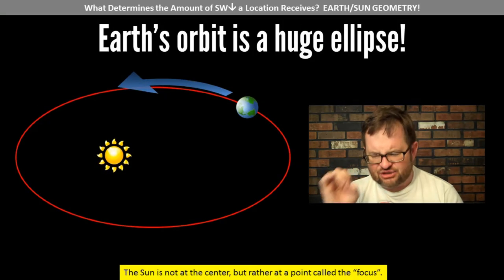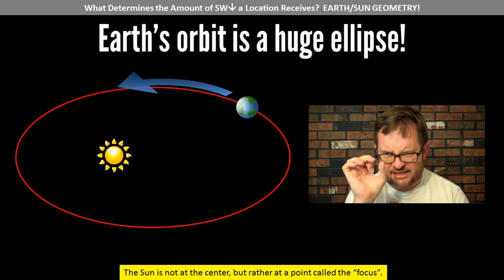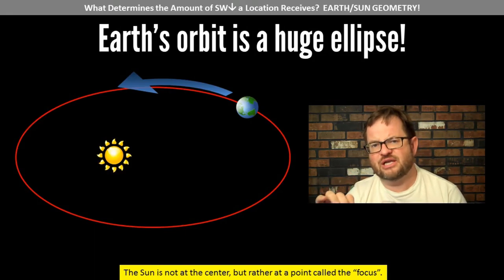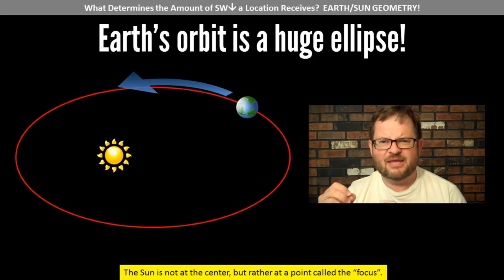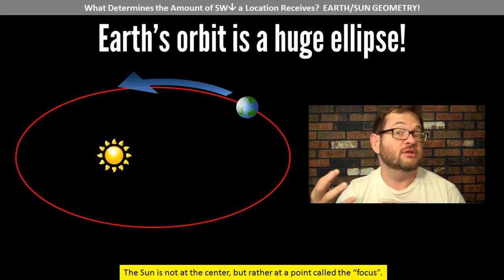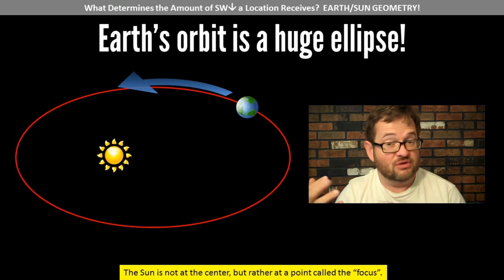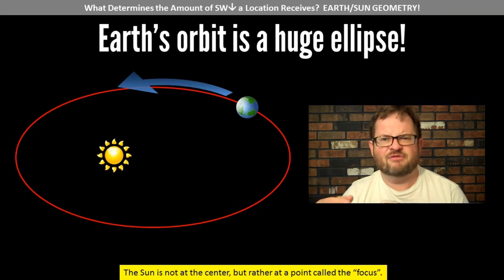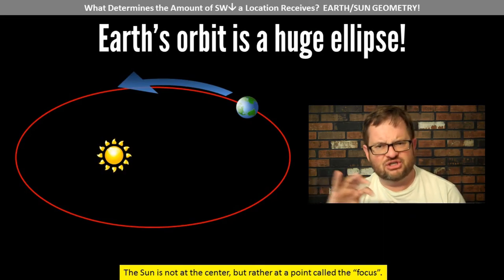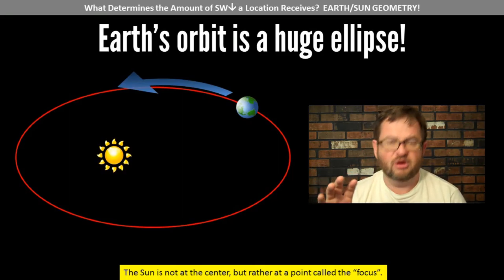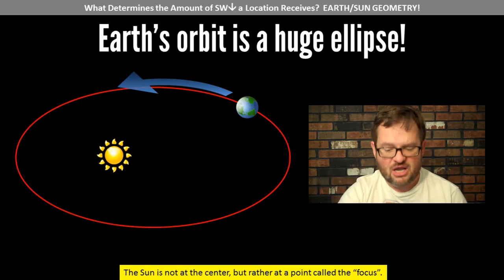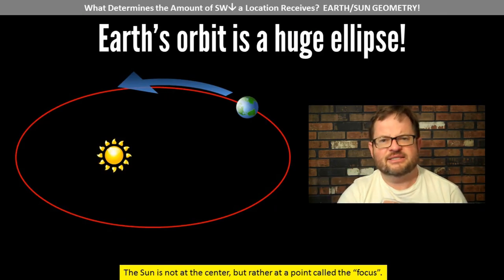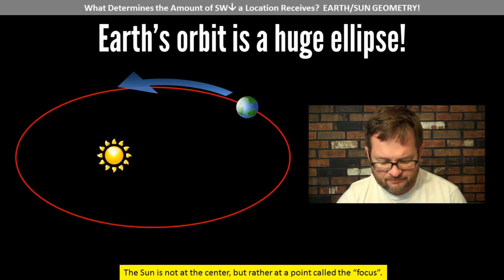To get into the details of this, we need to understand a few things about the Earth's orbit around the sun in a topic technically known as earth-sun geometry — about how the orbit of the Earth is set up and how that determines noon sun angles over the course of the year.